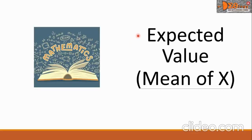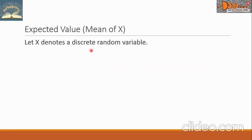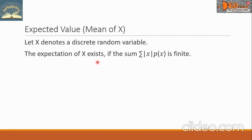Today we're going to study expected value, also called the mean of X. Let X denote a discrete random variable. The expectation of X exists if the summation of the absolute value of X multiplied by P(X) is finite.